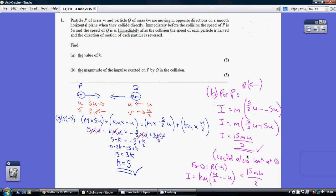If you look at it from the point of view of Q, which of course you can do, you get the same answer, 15 MU over 2.